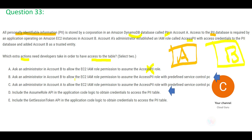Option B is correct because, apart from what A provides, it also applies predefined service controls — meaning the person from Box B can come and see the gold in Box A, but that's all: they cannot take it, open locks, or touch it beyond what's defined. Option D is also correct because it says you have to add an assume-role call in the application code logic to obtain credentials to access the PII data — ultimately you will be writing code to access this, so it must be done through a credential.